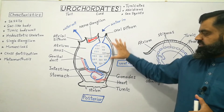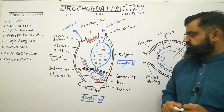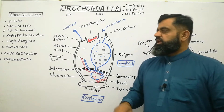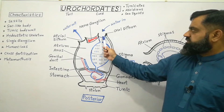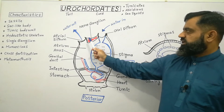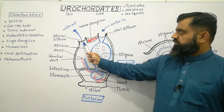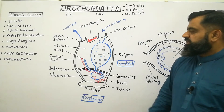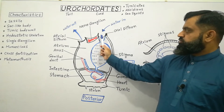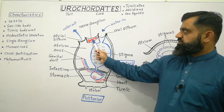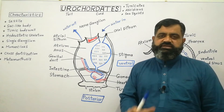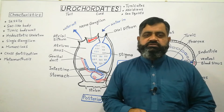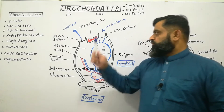Now let's look at the different systems present in Urochordata. First, the nervous system. As you can see, there is an incurrent siphon, also known as the oral siphon, and an excurrent siphon, also known as the atrial siphon, on the anterior side of the body. Just between these two siphons there is a nervous system in the form of a nerve ganglion or nerve plexus, which acts as a brain and coordinates all movements of the body.